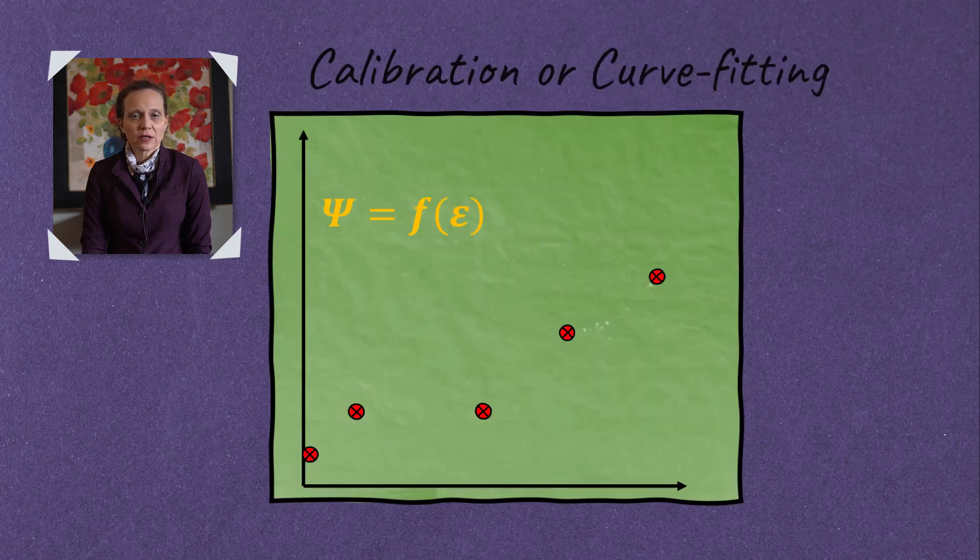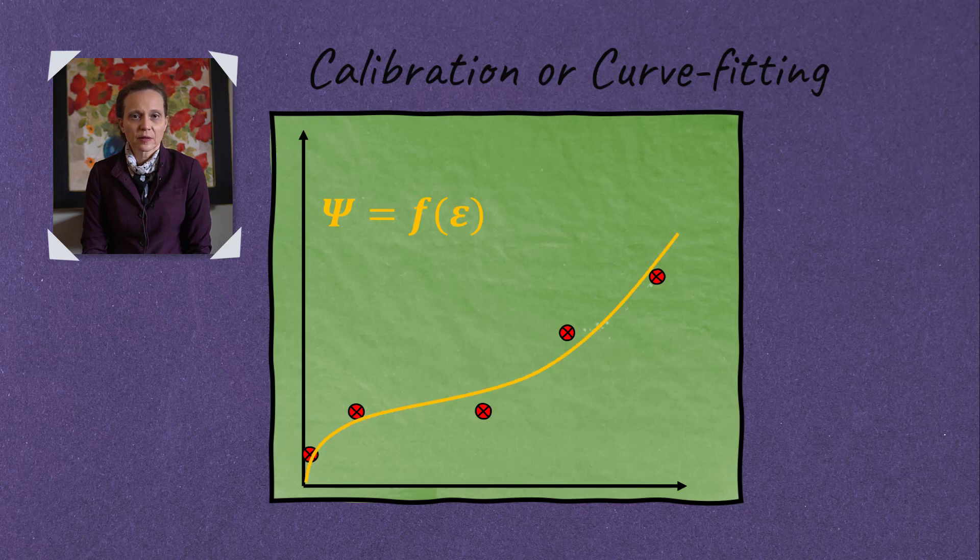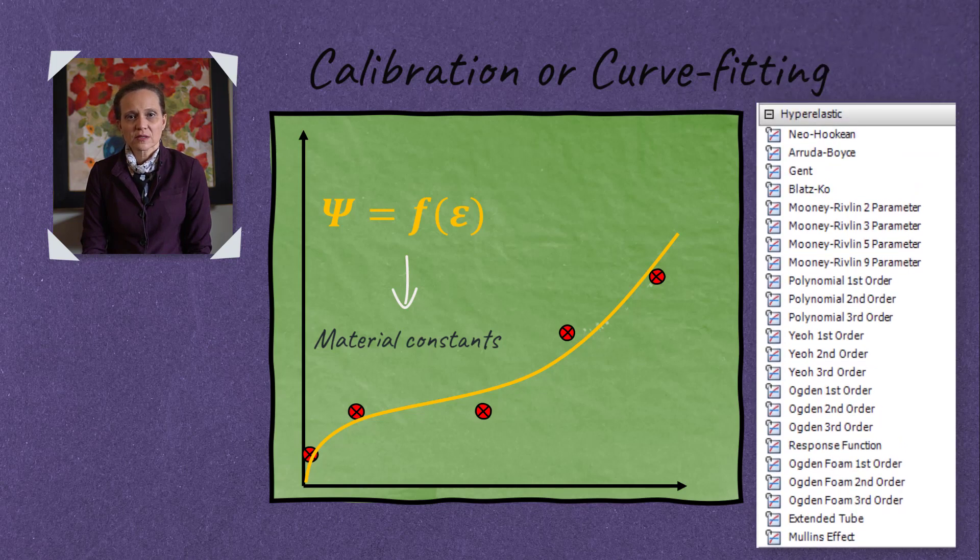The calibration of material model involves selecting a hyperelastic model and curve fitting it to the available experimental data. As a result, we get constants, which are considered as material properties. There are several hyperelastic material models available in Ansys Mechanical that a user can pick from and perform curve fitting inside engineering data.